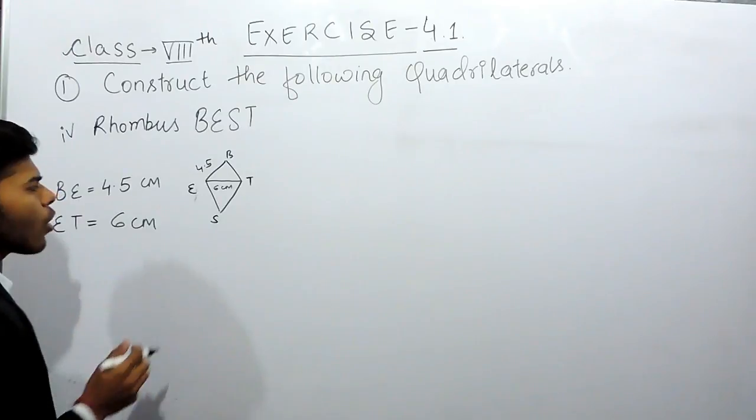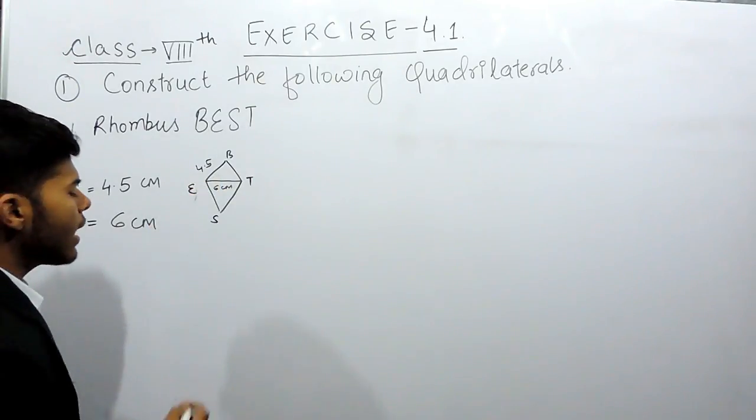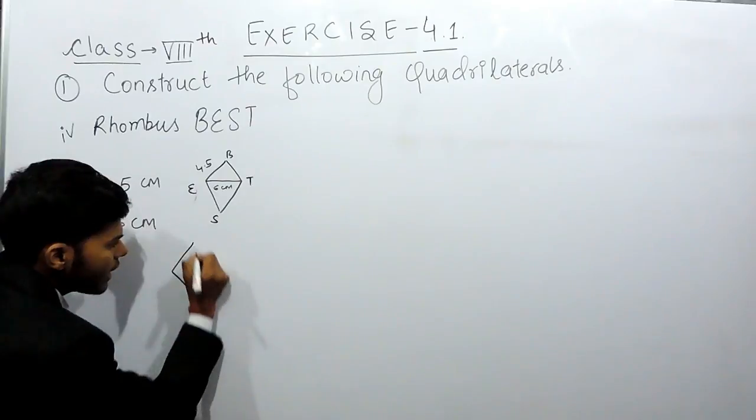Now you know that in a rhombus all the four sides are equal and the diagonals bisect each other at 90 degrees.